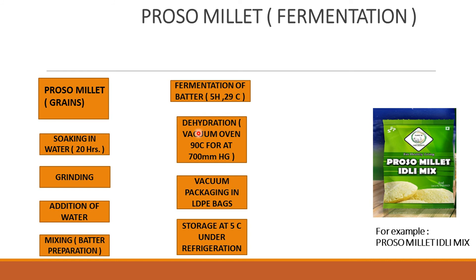After that we have dehydration, which is done in a vacuum oven at 90 degrees Celsius at 700 mmHg. Dehydration is done to extract moisture and inhibit the growth of microorganisms. Then we have vacuum packaging in LDPE bags — LDPE is used because it is flexible, has high ductility, and low tensile strength. After that we have storage at 5 degrees Celsius under refrigeration. Then we obtain the fermented product, that is ProSomulet idli mix.